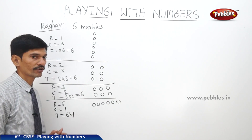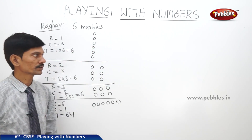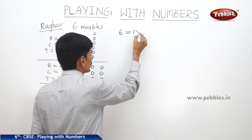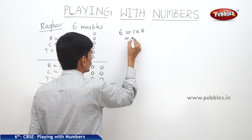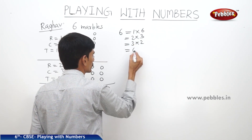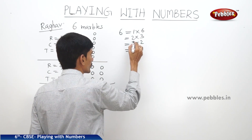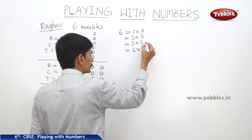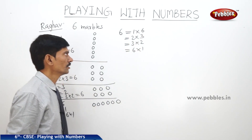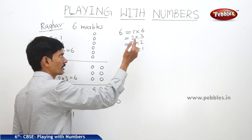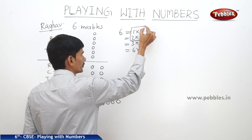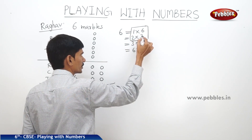The total number of marbles Raghav has is six. Now six can be written as one into six, or two into three, or three into two, or six into one. Since two into three and three into two are the same, and one into six and six into one are the same, six can be written as the product of one and six, or two and three. So one, two, three, and six are the exact dividers of the number six.